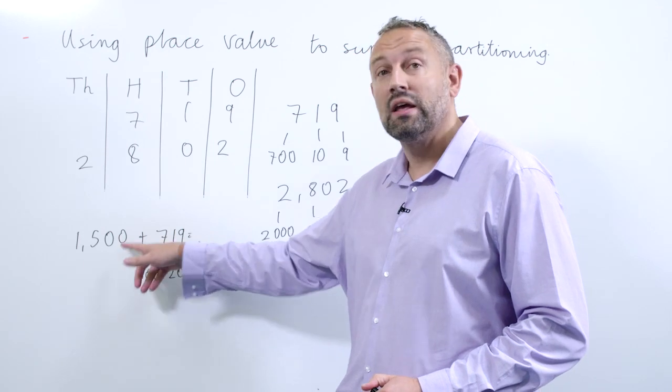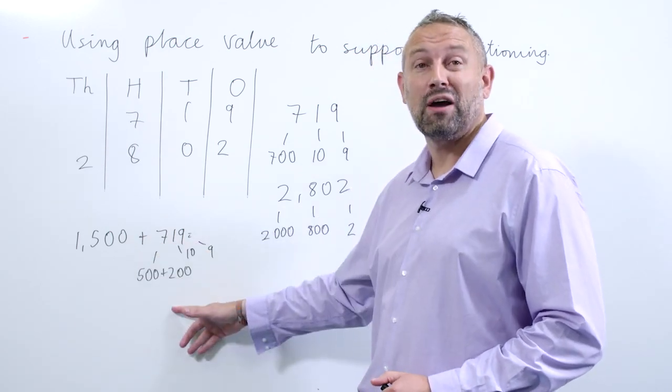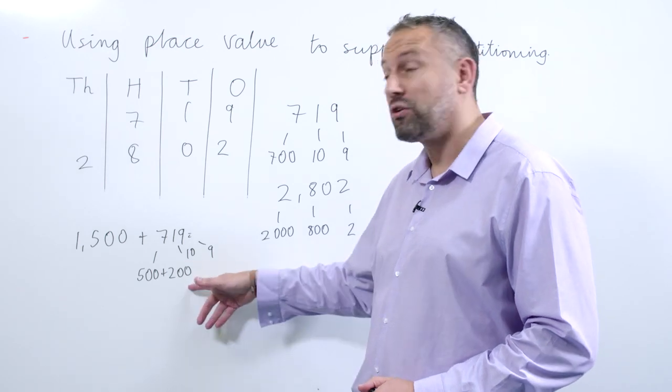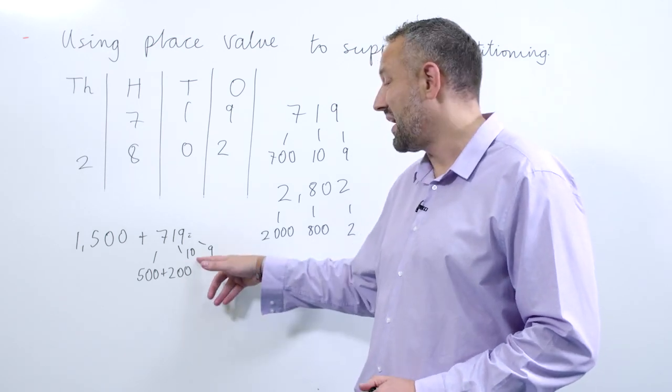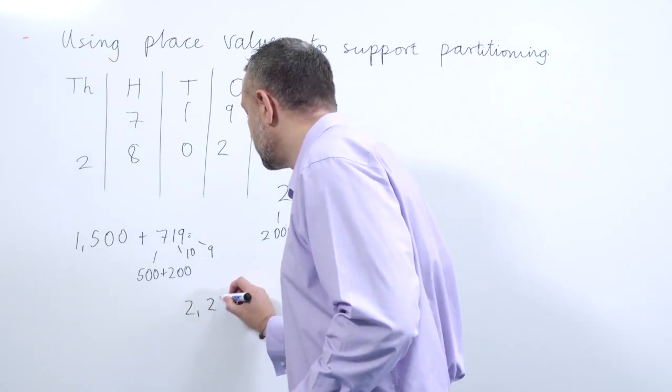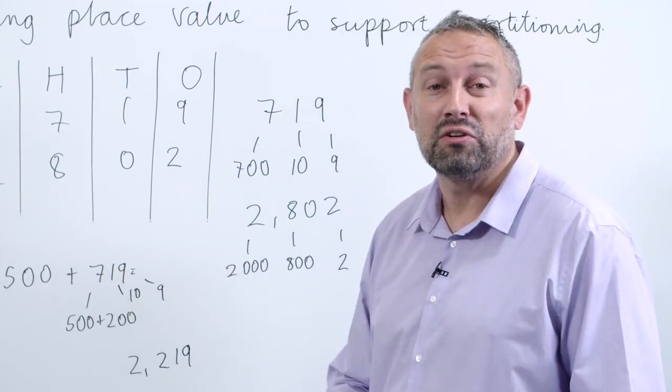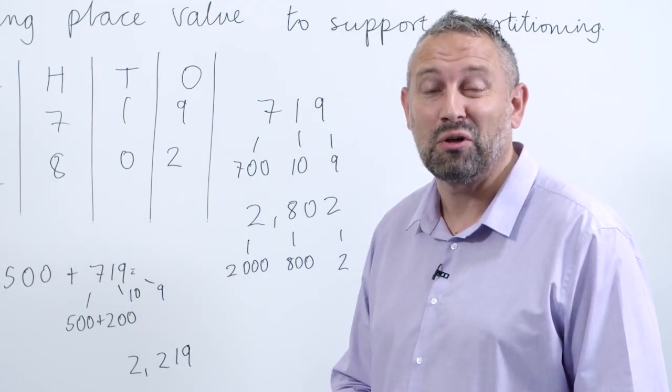So we have 1,500 add 500 is 2,000, add the 200 is 2,200, and add the 10 and the 9 is 2,219. And that's how we can use place value to solve partitioning problems and how to solve addition.